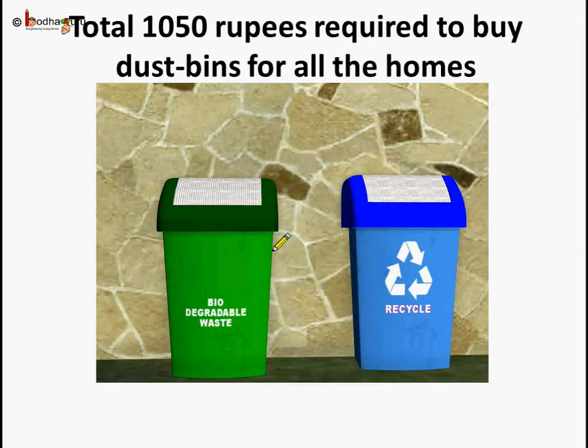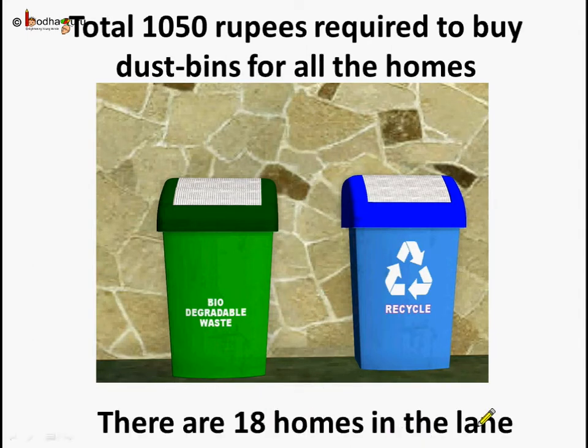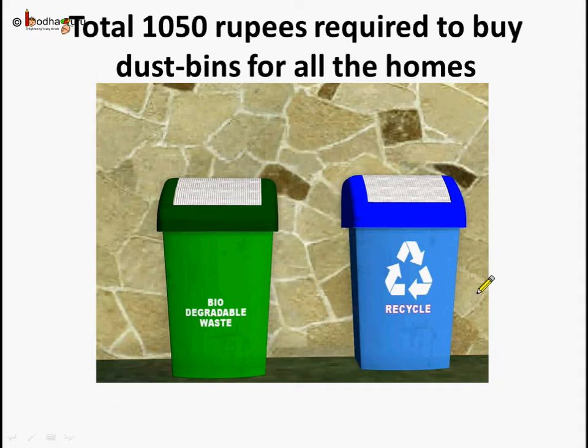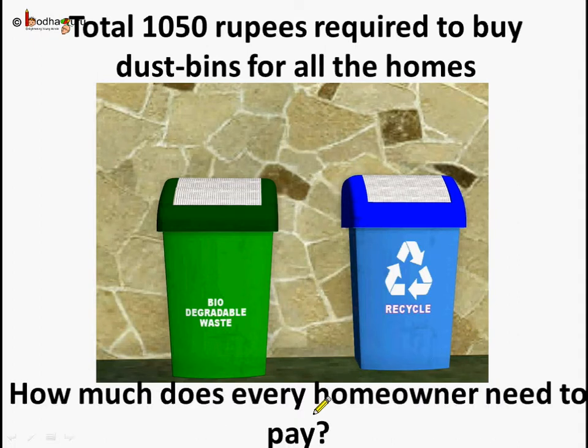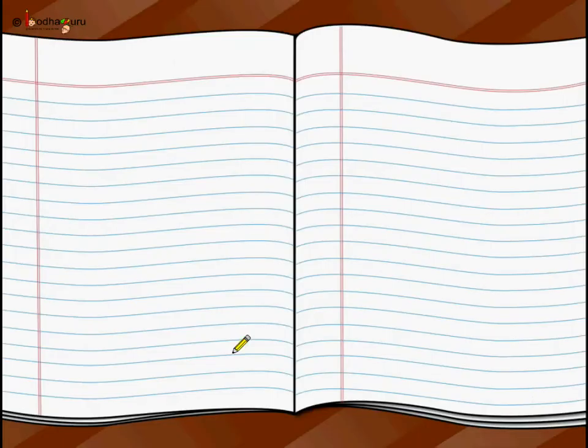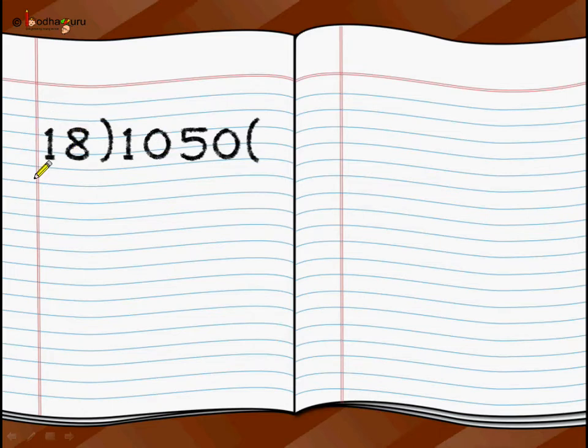So how much each home need to pay for the dustbins? Remember, there are 18 homes in the lane and the total amount of money required is 1050 to buy all the dustbins. And the problem is to find out how much money each homeowner needs to pay. So we are going to use division here. I'm going to write 1050 divided by 18. And again we start like just like the previous problem.